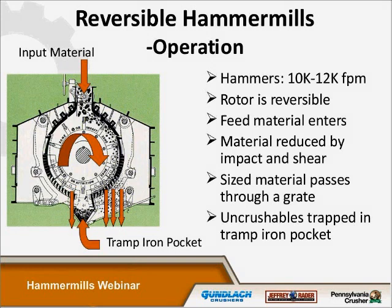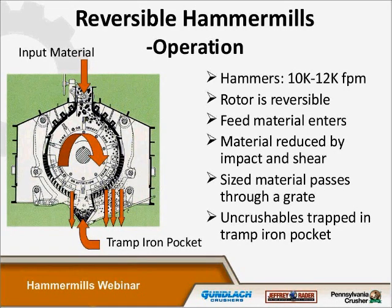Since the machine runs in only one direction, the hammers will wear only on one side and will need to be turned by hand when worn in order to present another sharp face. On our reversible hammer mills, the direction of rotor rotation is reversed periodically — generally every shift or every day. The output sizes produced by a reversible hammer mill tend to be slightly smaller than the one-way machines.